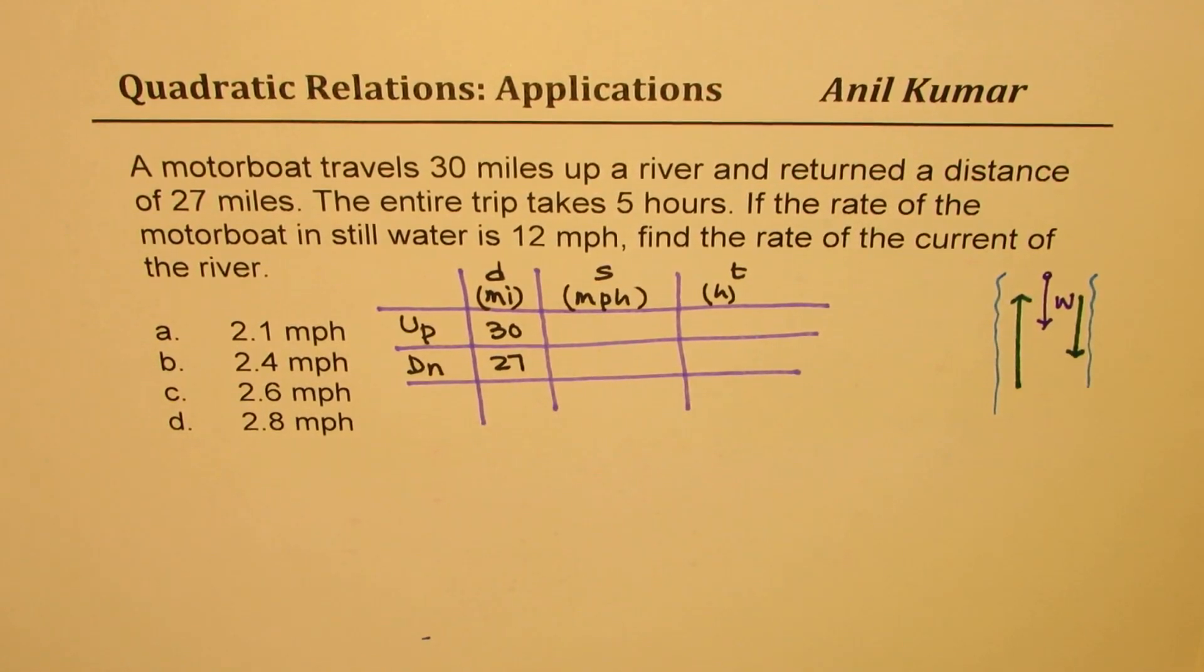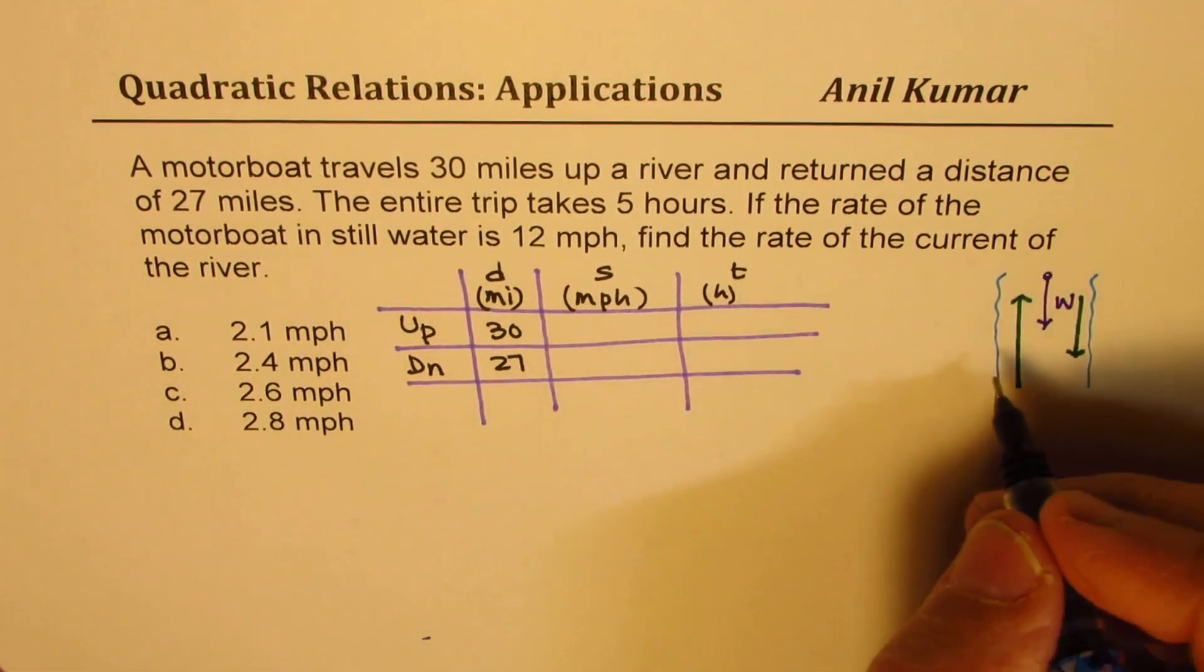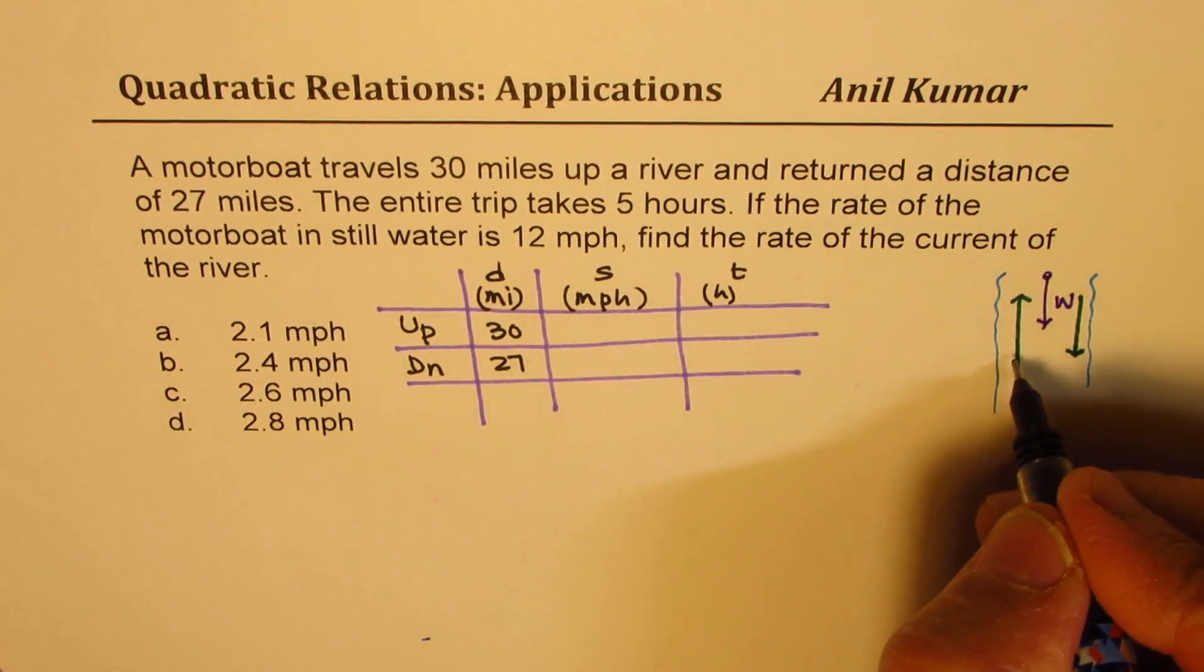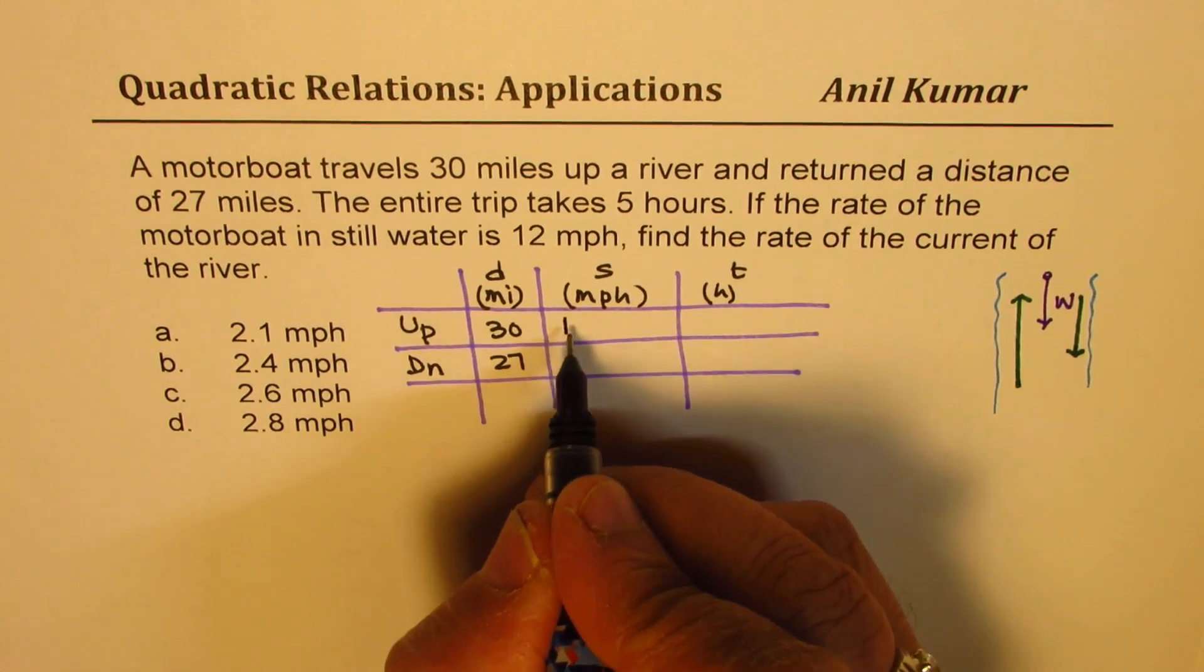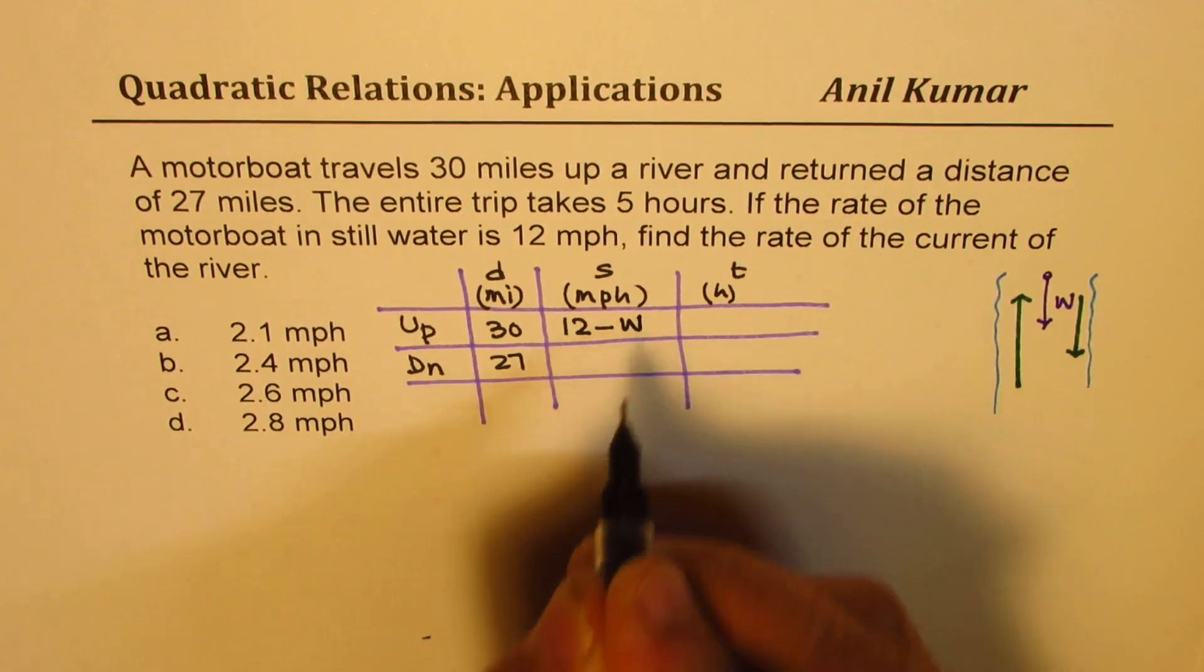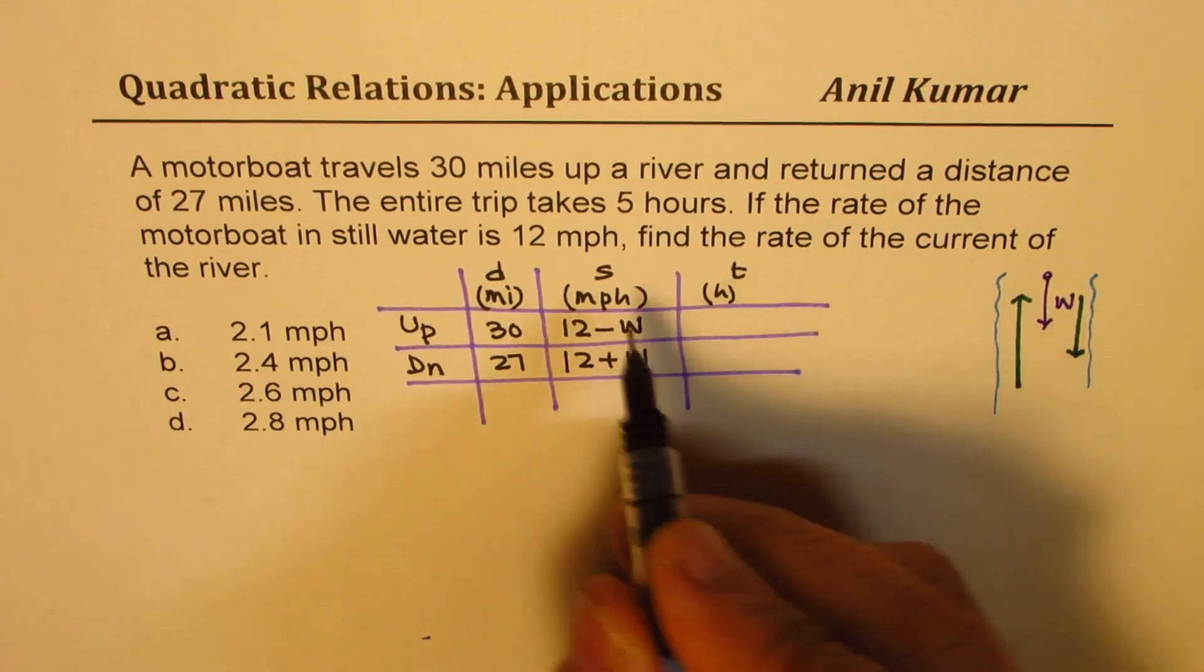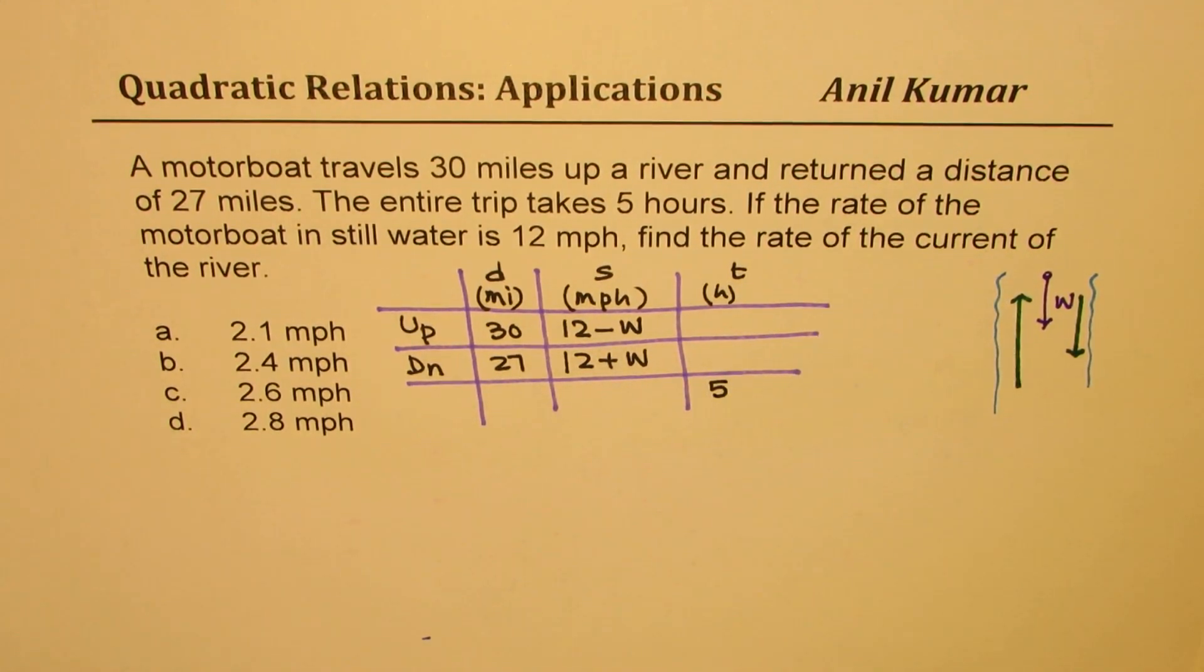Now what is the speed? The speed of the boat is 12 miles per hour. So the boat actually goes with 12 miles per hour, but when it goes up, it is against the current and therefore the speed should be 12 minus w, but when it comes down it should be 12 plus w. We are given the total time of 5 hours, so that is the total time taken. So this is the information given to us.